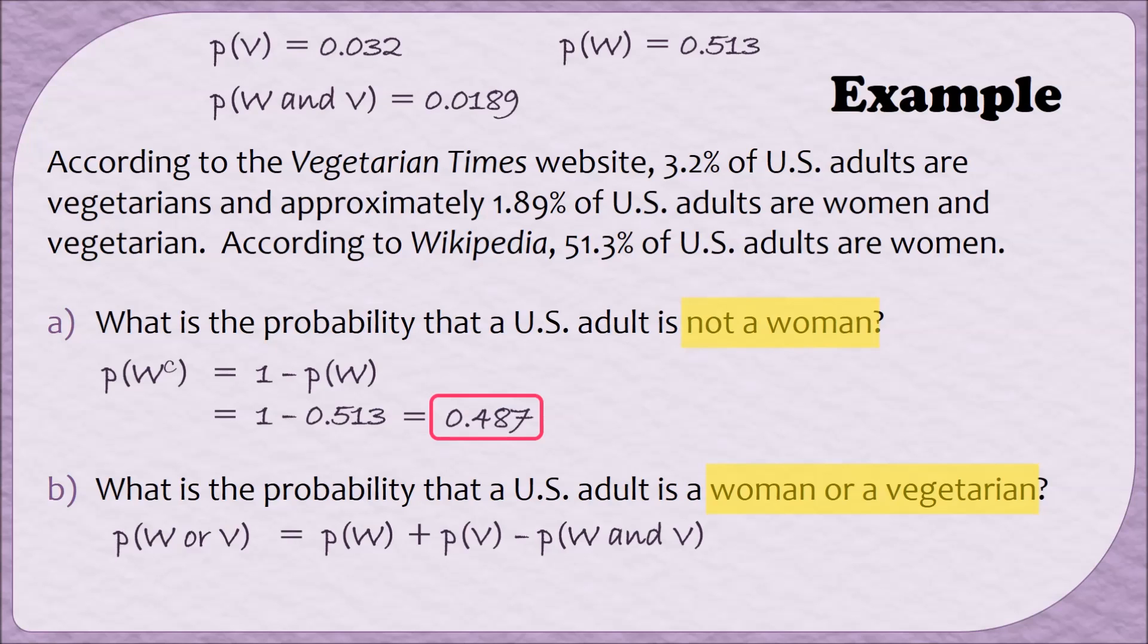When I look up at the top of the screen, the information that we summarized is all of the information we need in order to compute this compound probability. We can substitute in 0.513 for the probability of W, 0.032 for the probability of V, and 0.0189 for the probability of W AND V. When I carry out the operations, I end up with 0.5261.